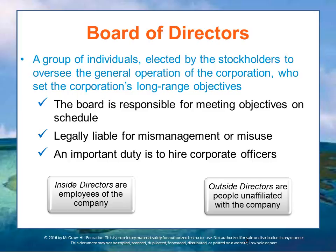Directors can be employees of the company — these are called inside directors — or they can be people who are unaffiliated with the company, called outside directors or independent directors. Inside directors are usually the senior officers responsible for running the company. Outside directors are often top executives of other companies, or they might be lawyers, bankers, or even professors.